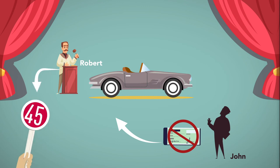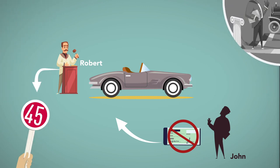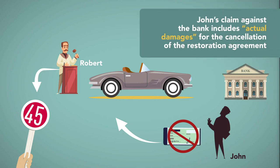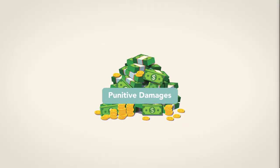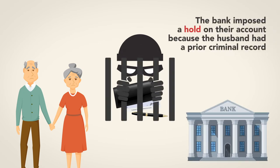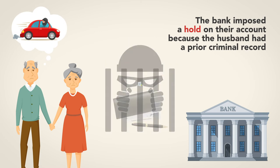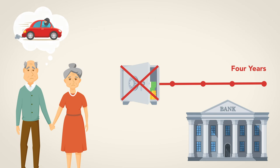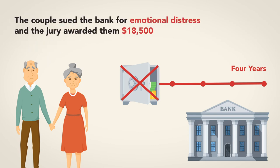As a result, Robert sells the car to the next highest bidder, and when it learns of the failed sale, Wellington's Car Museum cancels John's restoration project. John's claim against the bank includes actual damages for the cancellation of the restoration agreement. Moreover, some courts have allowed punitive damages where the bank's conduct was intolerable. In one case, a forger stole a couple's checkbook and passed some bad checks; while the offender was quickly caught, the bank imposed a hold on their account because the husband had a prior criminal record, although he was not at fault for the forgeries. The bank maintained the hold for four years. The couple sued the bank for emotional distress and the jury awarded them $18,500.